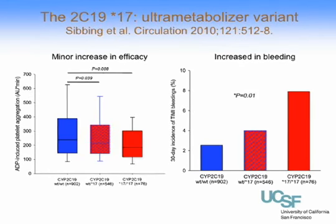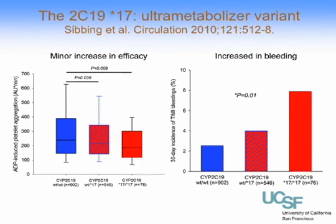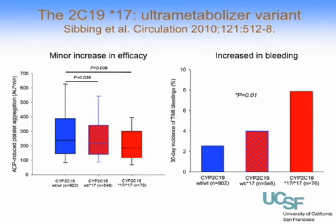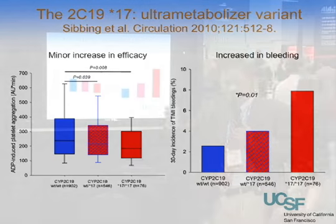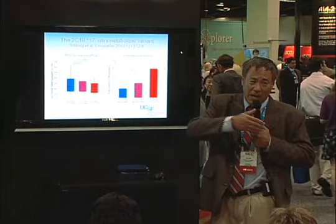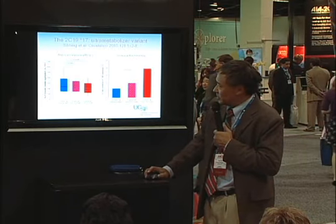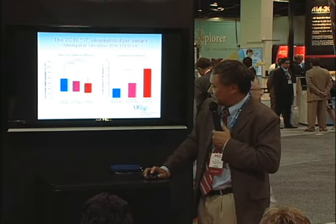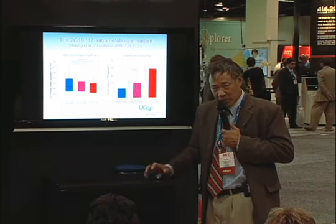Dr. Cole mentioned the 2C19 Star 17 genotype, which is the opposite direction — this is a hypermetabolizer. You end up producing a little too much of the active metabolite, shifting the platelet spectrum from inactivity toward hypercoagulation, and there's an increase in bleeding effects if you block the platelets too much.